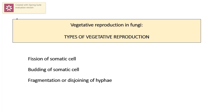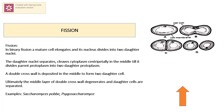Fission is the type of vegetative reproduction in which the parent cell elongates and stretches out, then the nucleus starts dividing and wall formation occurs between the two cells, and the parent cell divides into two daughter cells. This is a simple type of vegetative reproduction and it happens in Saccharomyces and many other related families.